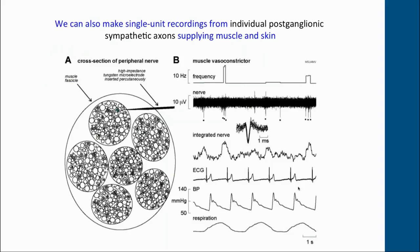Using very high-impedance microelectrodes, we can record from single sympathetic axons. This is technically very difficult because axons travel in the fascicle as a group — the idea is to get the electrode tip as close as possible to one axon so that its generated spike stands out from the noise. Here we have a muscle vasoconstrictor neuron firing spontaneously, with asterisks indicating when the unit fires. In the inset, superimposed spikes show a uniform spike morphology. We can also see far-field activity in the integrated nerve, giving an idea of population activity alongside the single-unit activity.